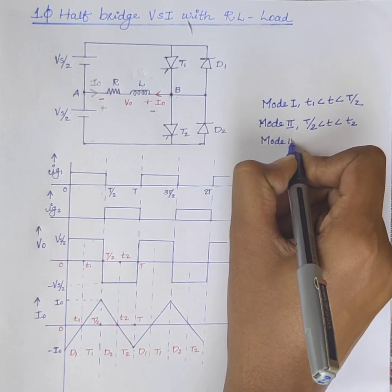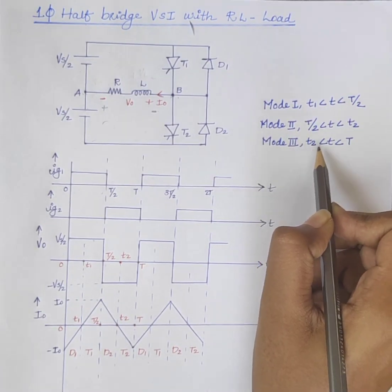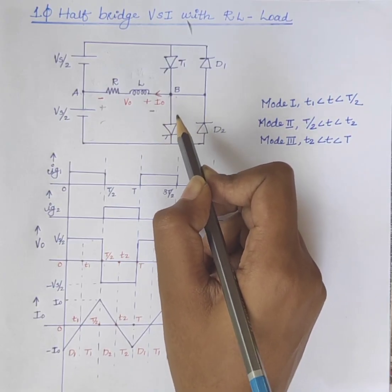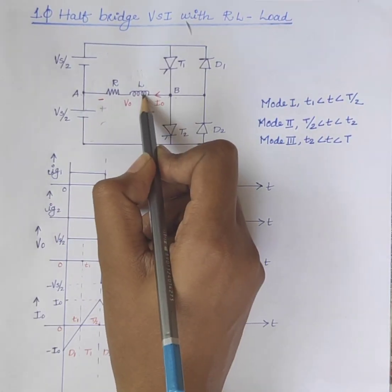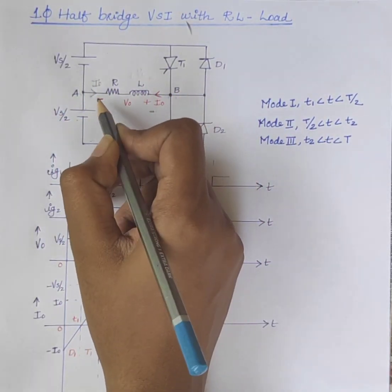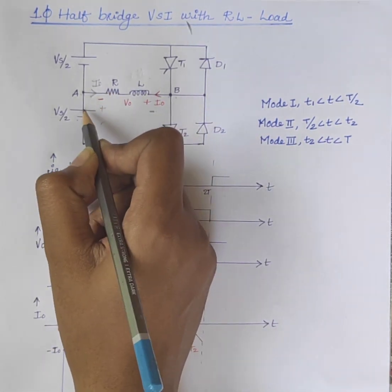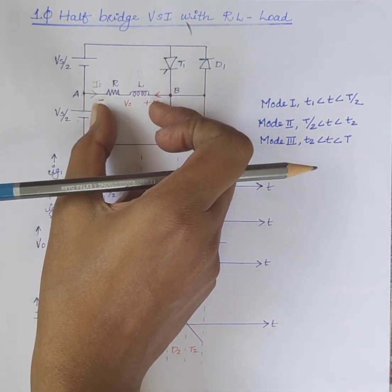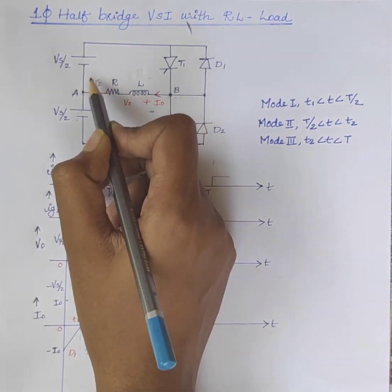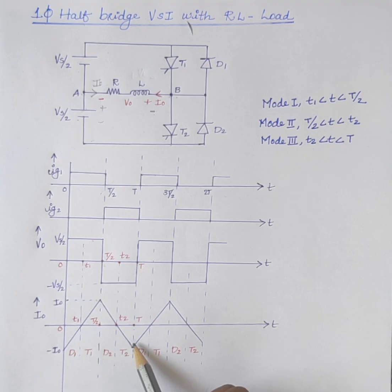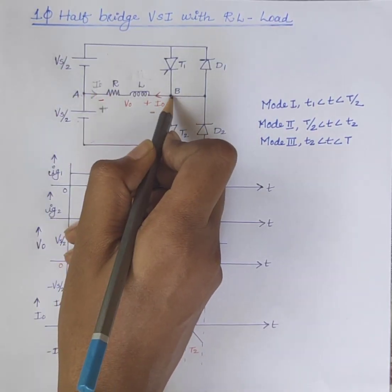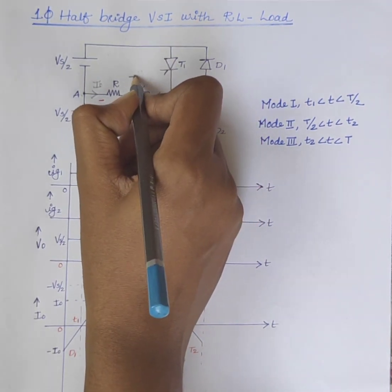Mode 3 covers the interval from T2 onward. At instant T2, thyristor T2 is turned on and current flows through the path Vs/2 → load → T2 → back to the source. The current direction is from A to B, so the current is negative, and the output voltage is minus Vs/2. During this interval, the load current reaches a negative peak. Since current flows from A to B and A is positive with respect to B, the inductor voltage polarity is minus-plus.